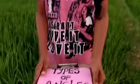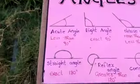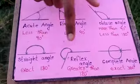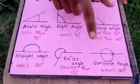Today I am here to explain about types of angles. Here we can see there are 6 types of angles: acute angle, right angle, obtuse angle, straight angle, reflex angle, and complete angle.